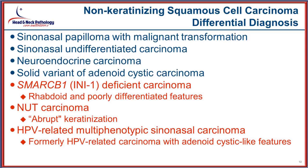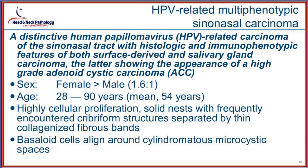Let's talk about the first provisional entity. The reason we use the term 'provisional' is that to be incorporated into the WHO classification, you need at least two or three publications on a topic involving multiple different institutions. You can't have a single author group putting out papers without corroboration from others. At the time this entity was being considered in 2015–2016, the volume of literature was not yet sufficient to be categorized as a separate lesion. This is a distinctive HPV-associated carcinoma of the sinonasal tract with both surface epithelial derivation and a salivary gland type carcinoma pattern — high-grade adenoid cystic carcinoma being the most frequently identified.